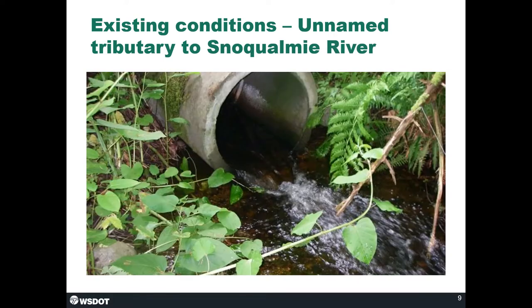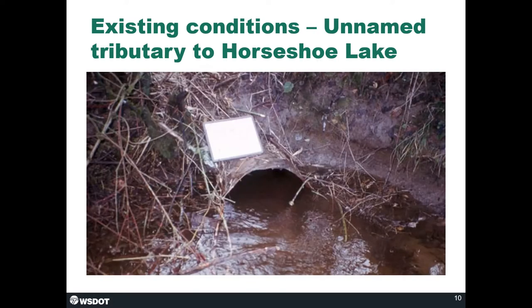The unnamed tributary to the Snoqualmie River emerging from under SR203 near 324th Way Northeast is only 24 inches in diameter and the water is very shallow — it is considered completely impassable to fish including coho, resident trout, steelhead, and sea-run cutthroat. The pipe carrying the unnamed tributary to Horseshoe Lake under SR203 is also just 24 inches in diameter and rated as impassable, used by the same fish species.